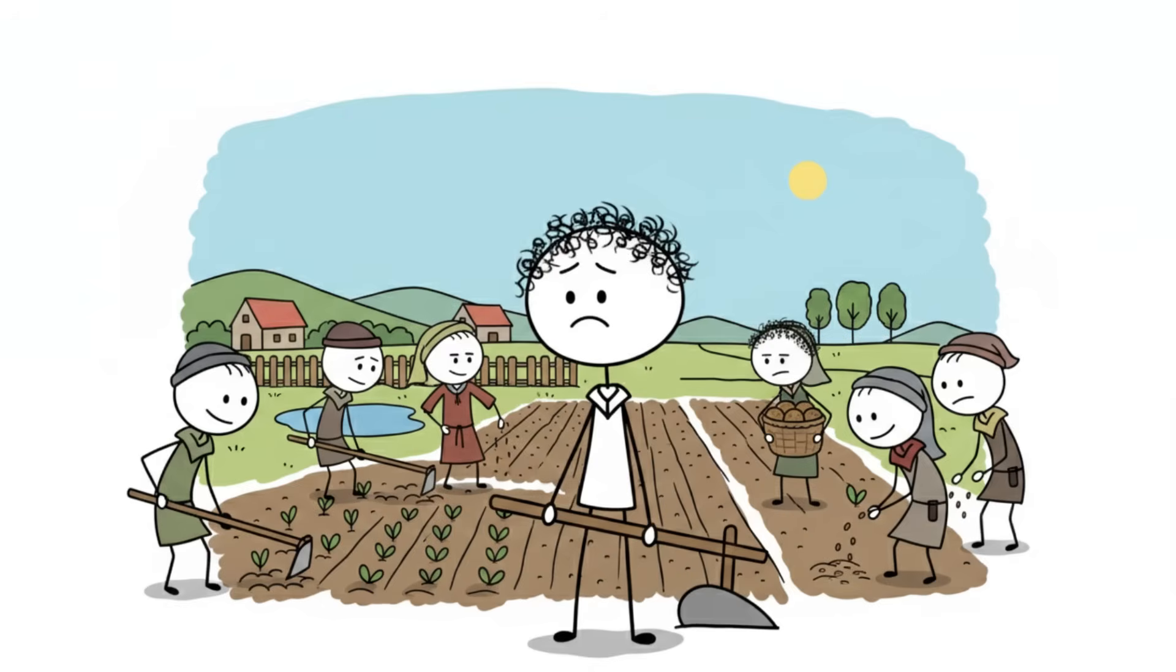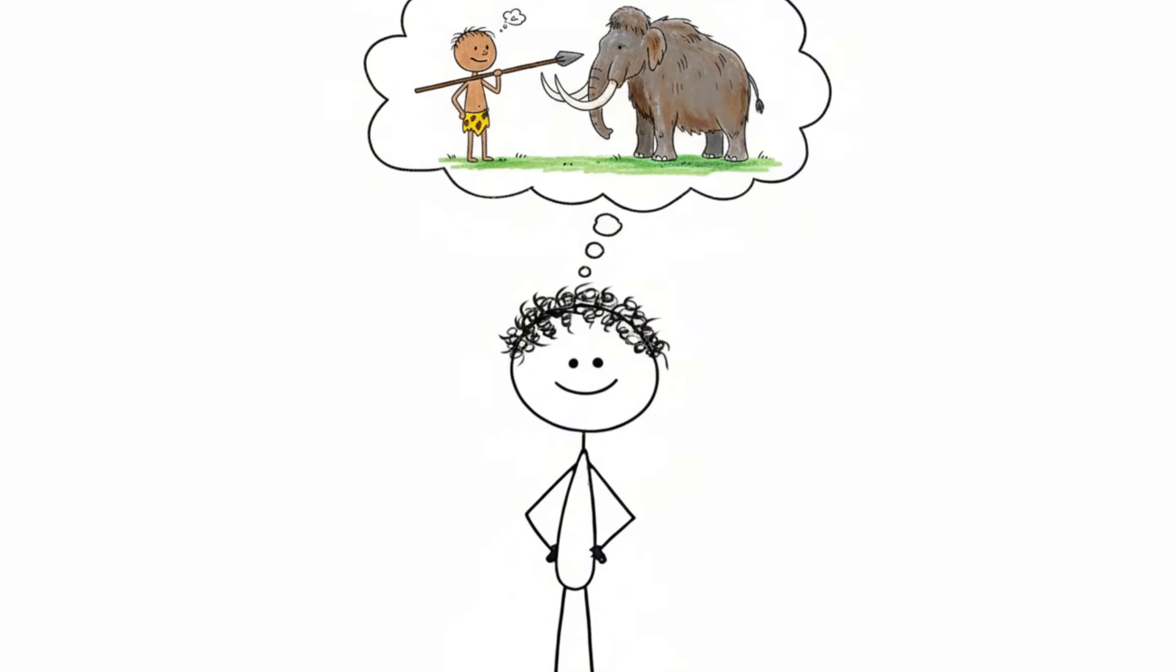Our brains, which are incredibly expensive organs to run, may have simply downsized to be more efficient, less dense, and more specialized for social living. You are essentially carrying around the light version of a brain that was once designed to take down a mammoth.